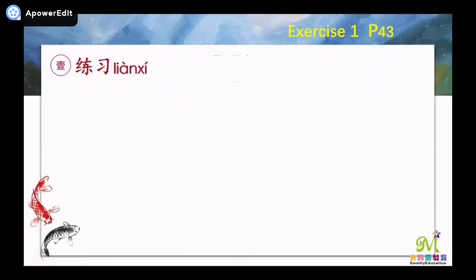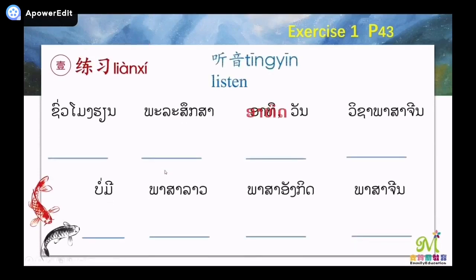Now let's do some exercises about the new words. First, listen. I will speak some Chinese words and you listen and write the number. Let's begin: 一,中文. 二,英文. 三,课. 四,老挝语. 五,星期. 六,体育. 七,没有. 八,中文课.